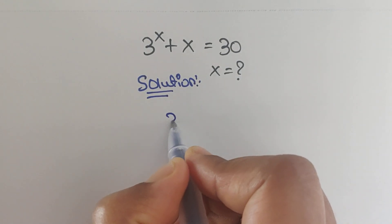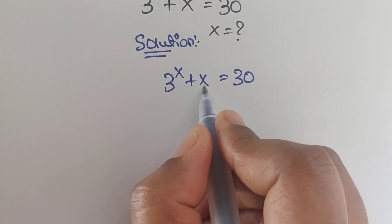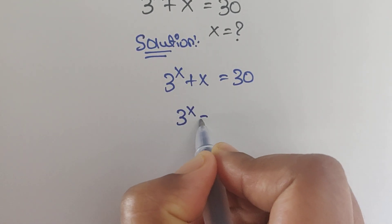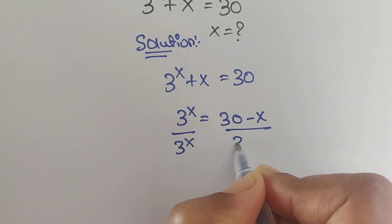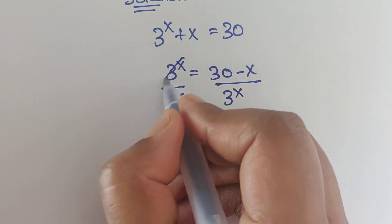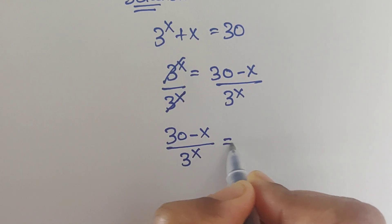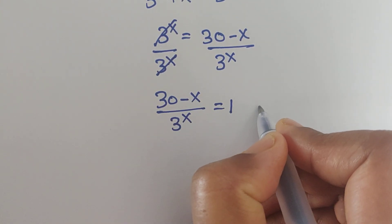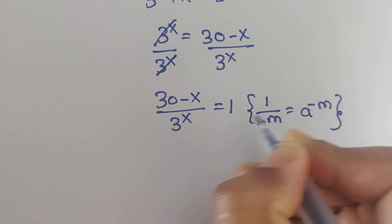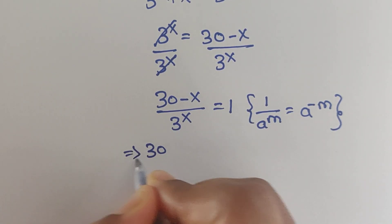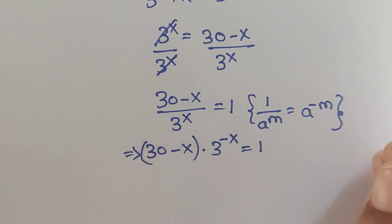We have given 3 to the power x plus x equals 30. Move the x term to the right side, so 3 to the power x equals 30 minus x. Now divide both sides by 3 to the power x — the 3^x cancels — and we get (30 minus x) divided by 3^x equals 1. We can apply the formula 1 over a^m equals a^(minus m), so we write (30 minus x) times 3 to the power of minus x equals 1.